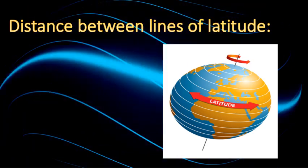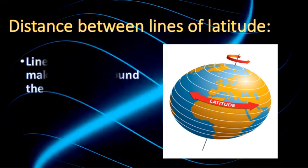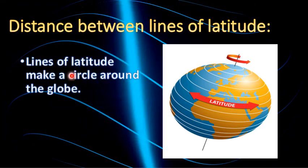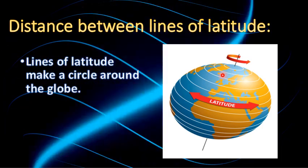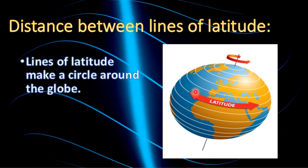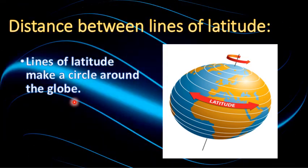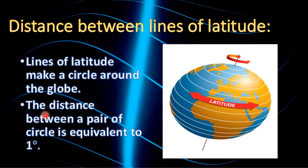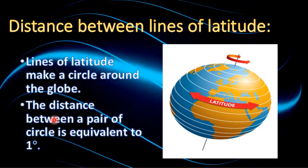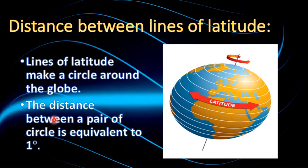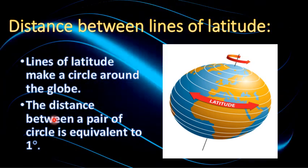Next is the distance between lines of latitude. Lines of latitude make circles around the globe — you can see circle-like structures in the picture, 180 in number. The distance between one pair of circles is equivalent to one degree, since we measure lines of latitude in degrees.